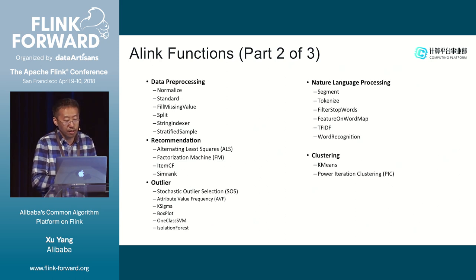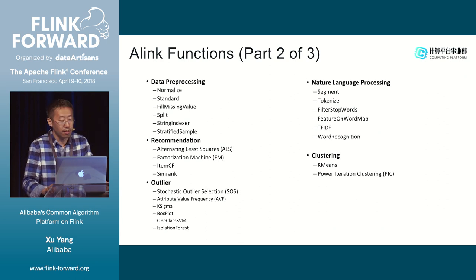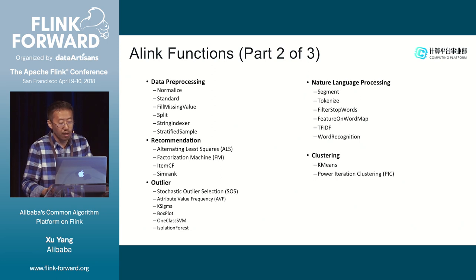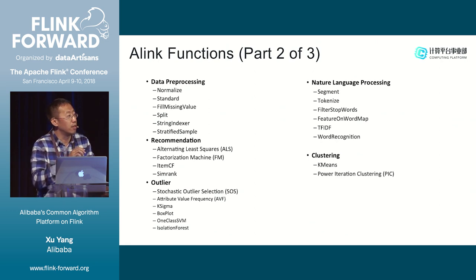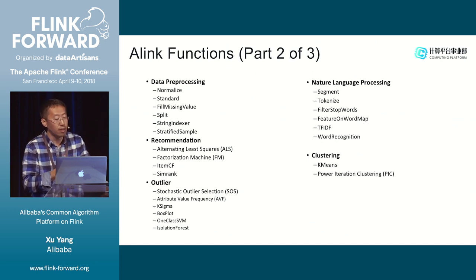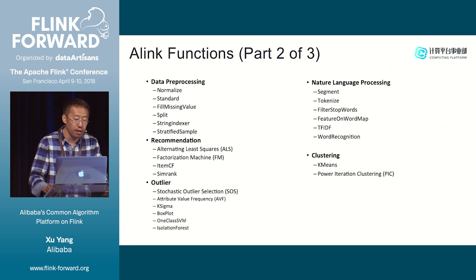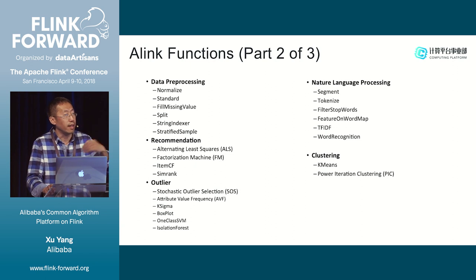The second part of the functionality is data processing and recommendation. We have implemented about four commonly used algorithms and six common outlier algorithms. We also provide natural language processing — this is very important for text data. Using these NLP algorithms, we can extract features for the next machine learning training and prediction.